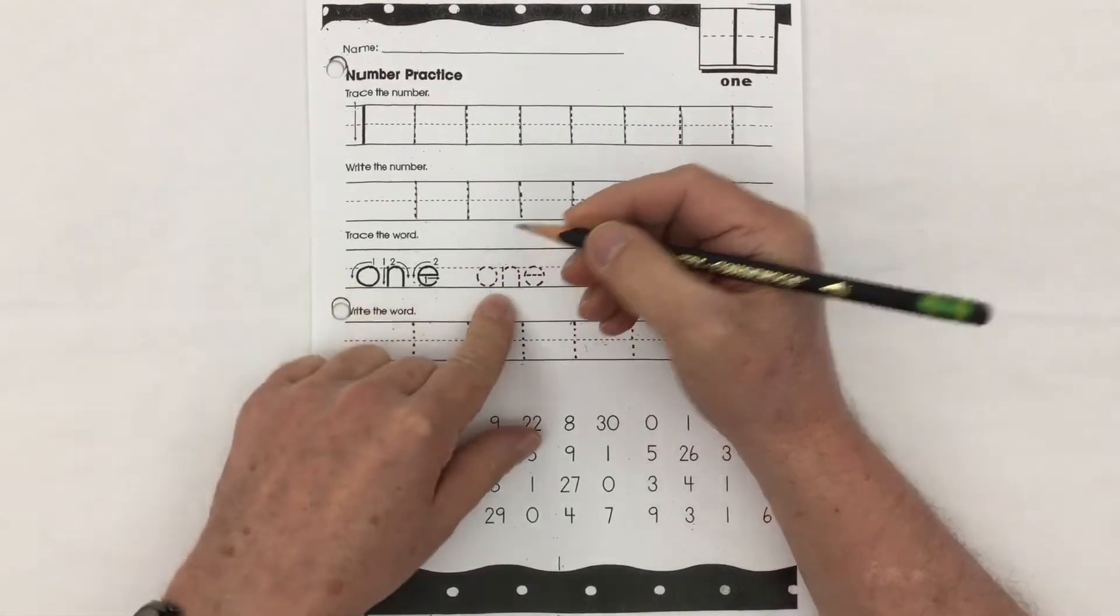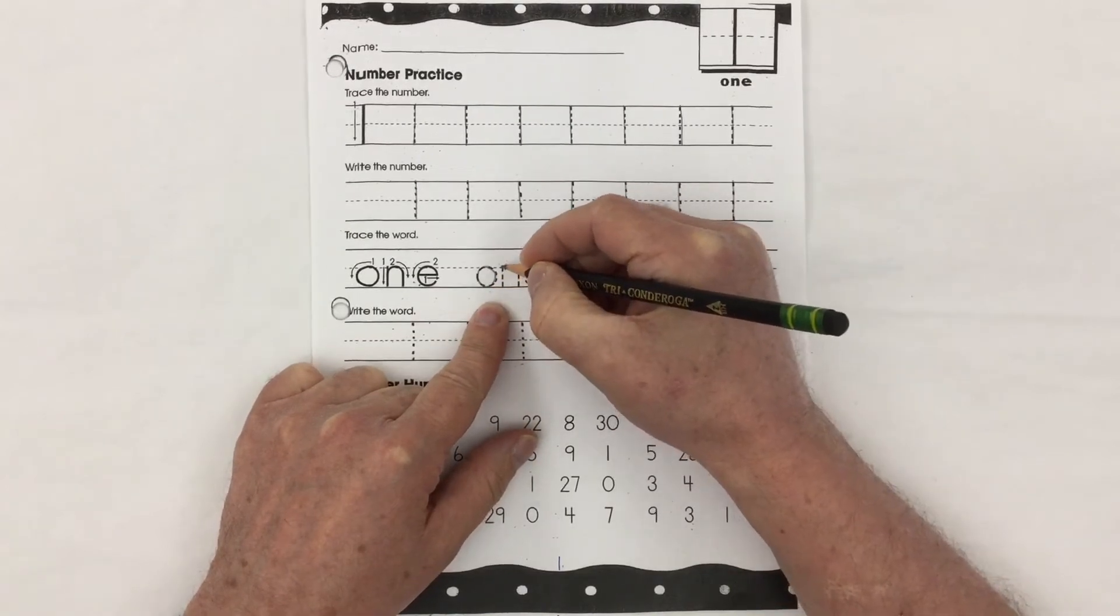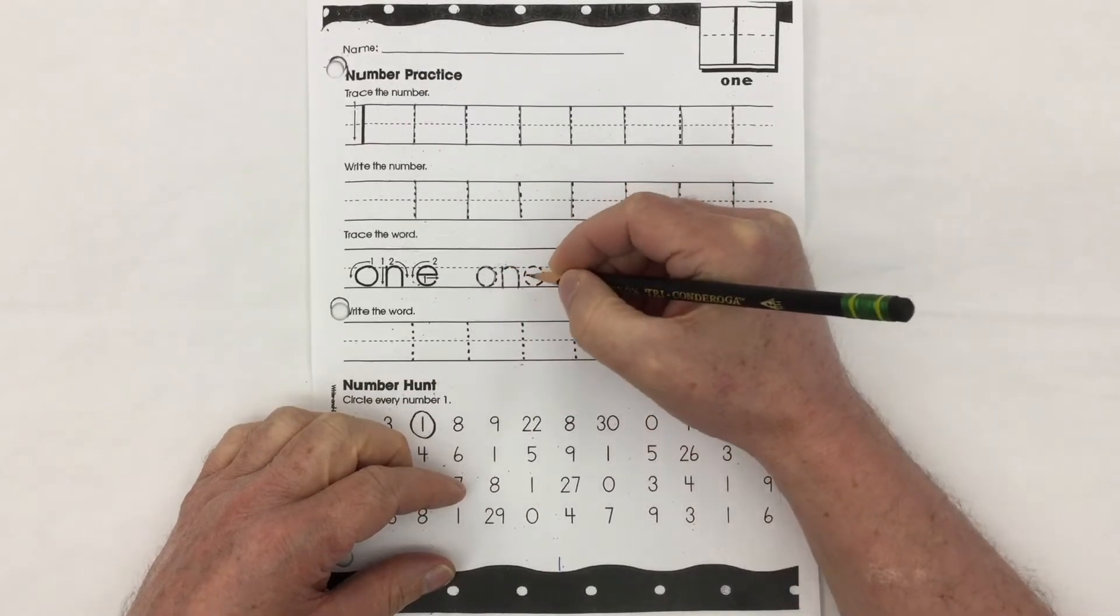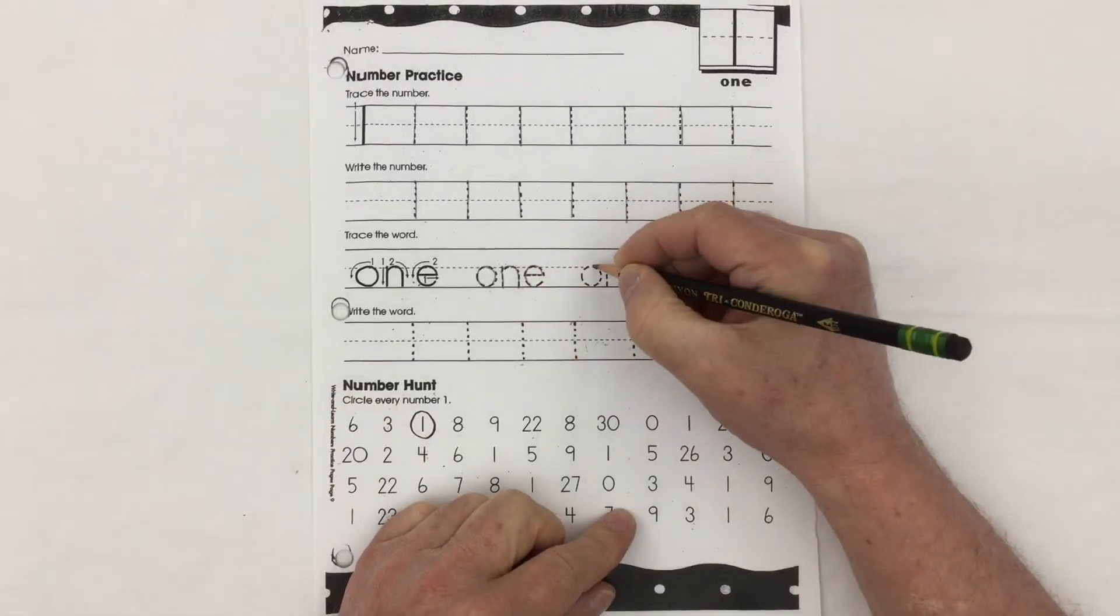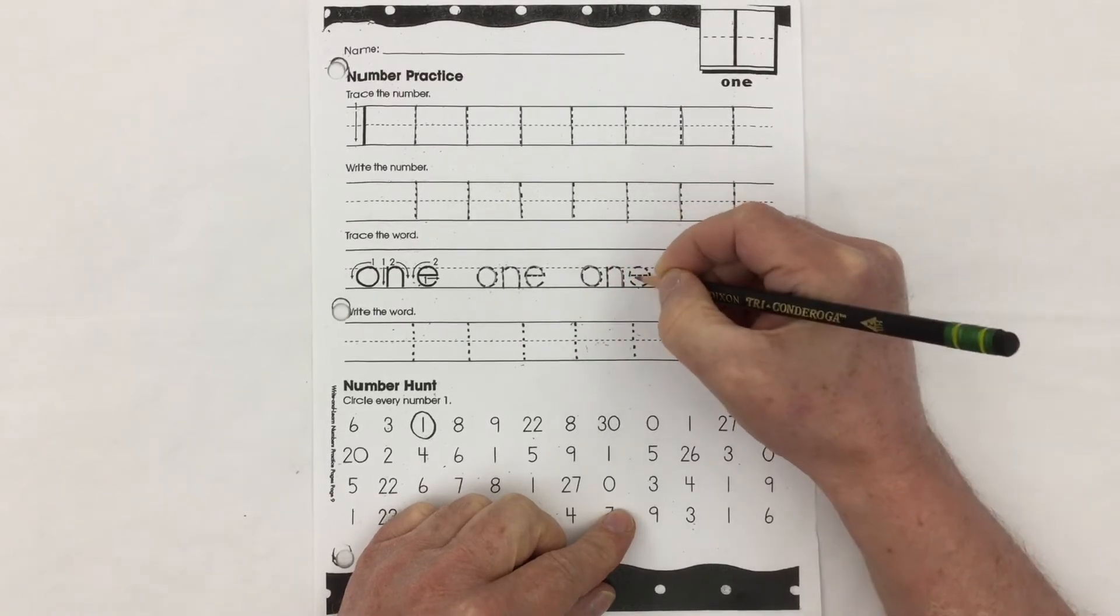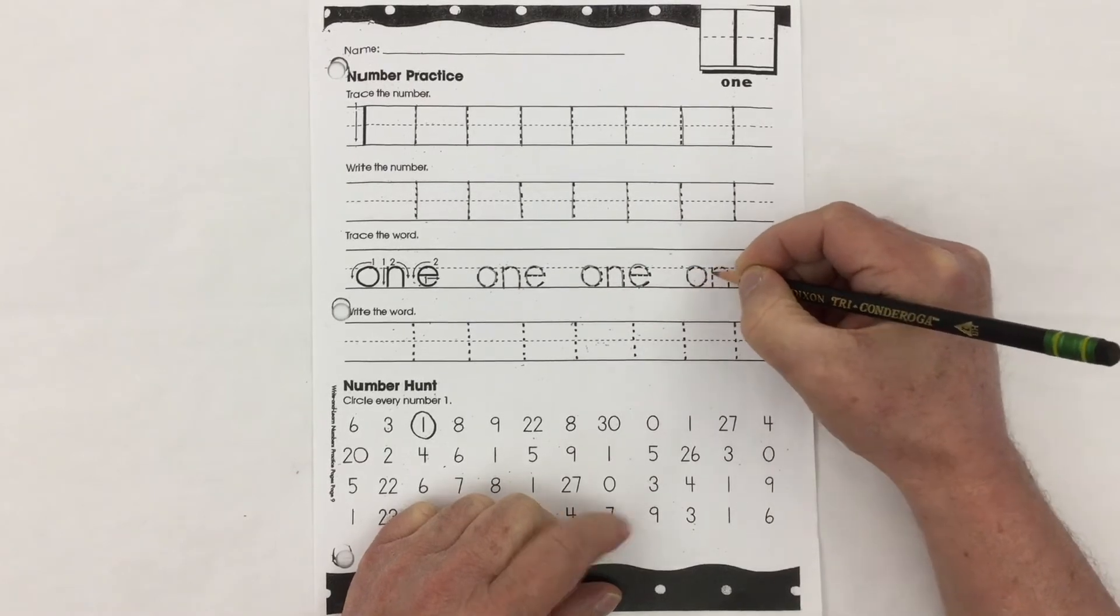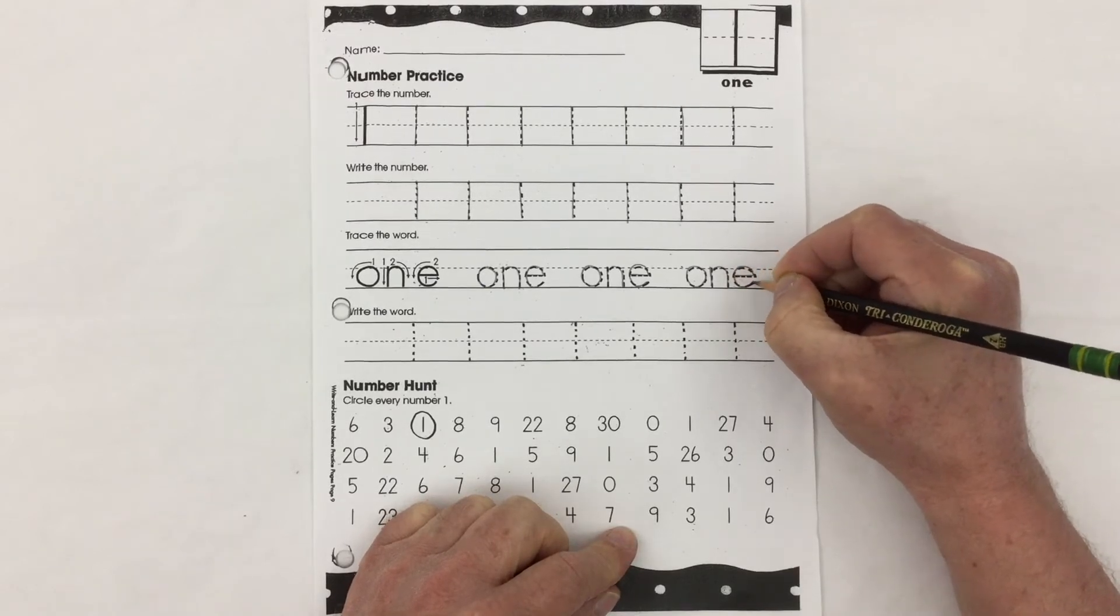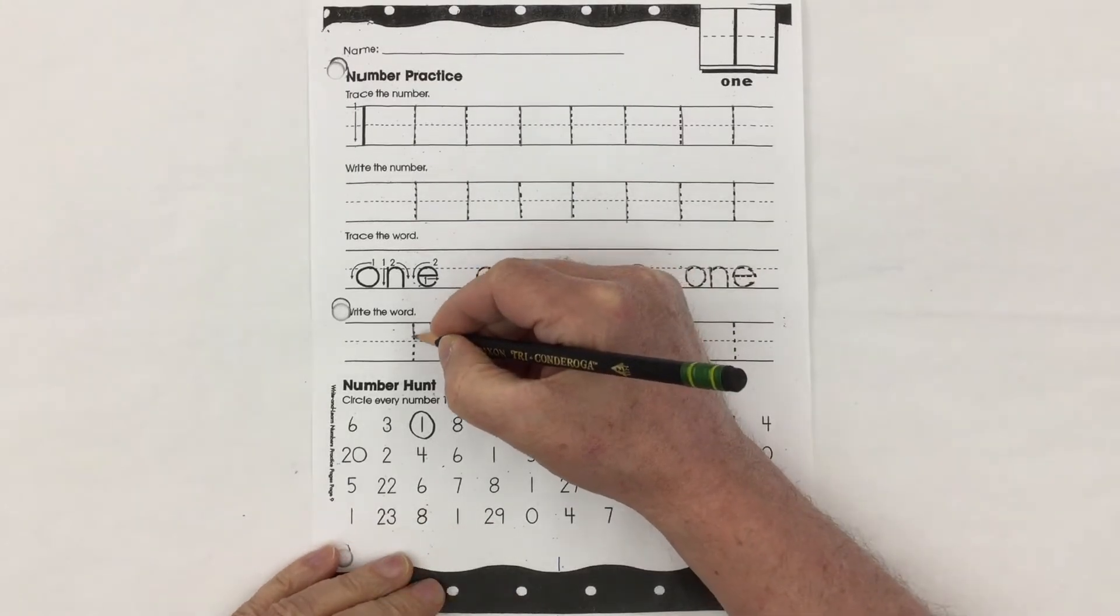Here we have the number one. Start at the top and go around, start at the top and go down, back up to the top and around and down. Start in the middle, go across, up and down. One, start at the top and go down.